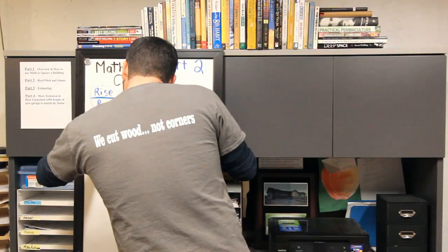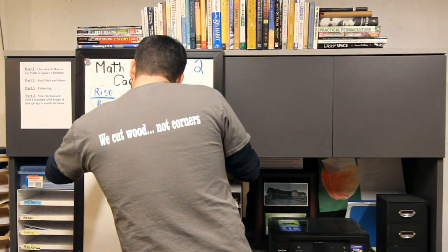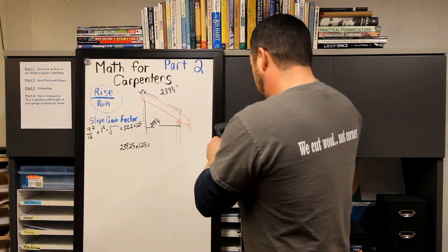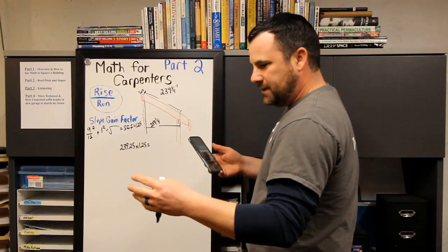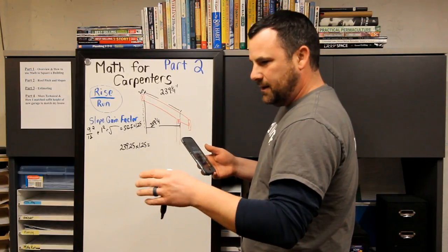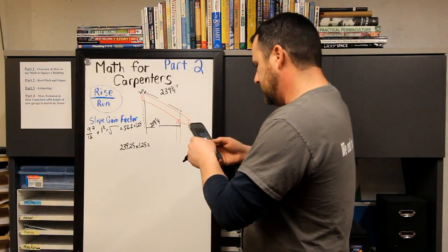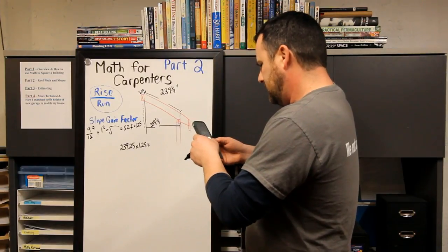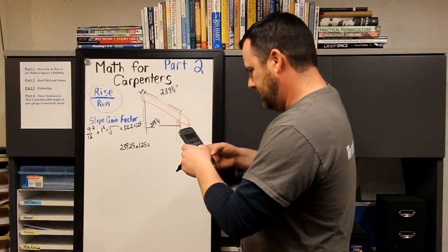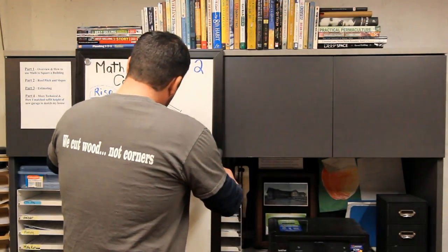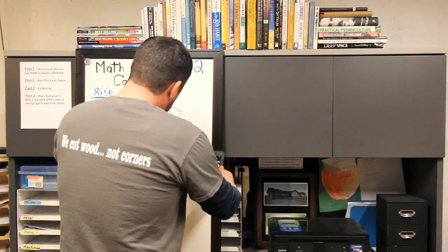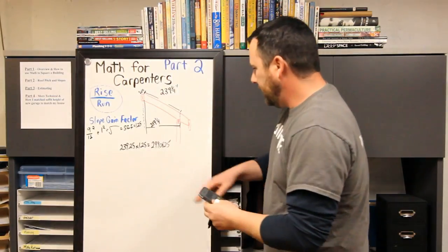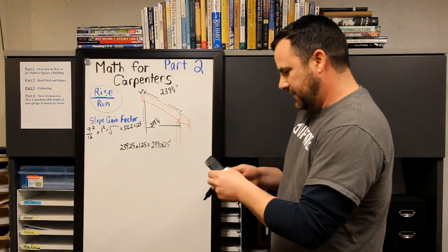So we just go 239.25 times 1.25 equals 299.0625 inches. You can see how putting it into inches is more accurate than keeping it into feet, because you'd have to convert your decimals and that just gets crazy.